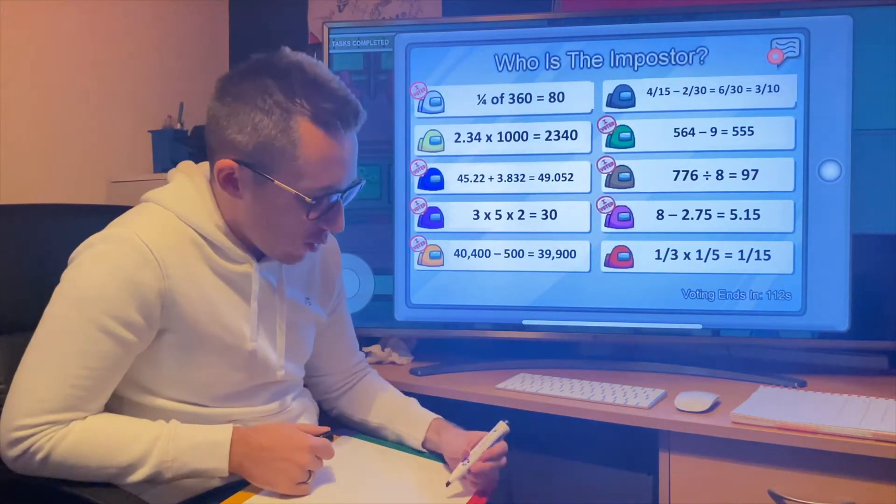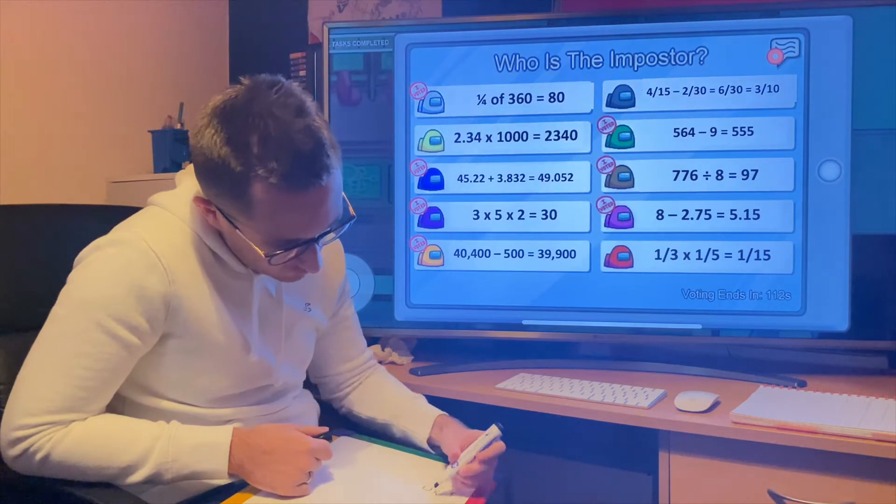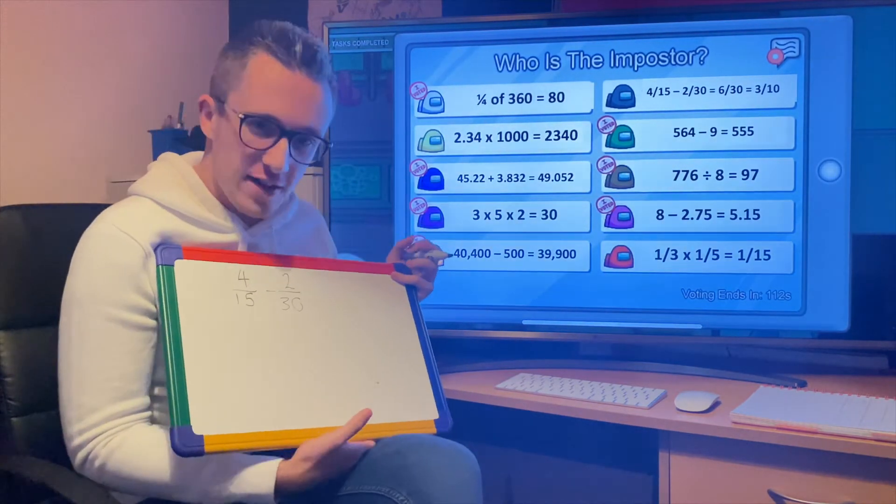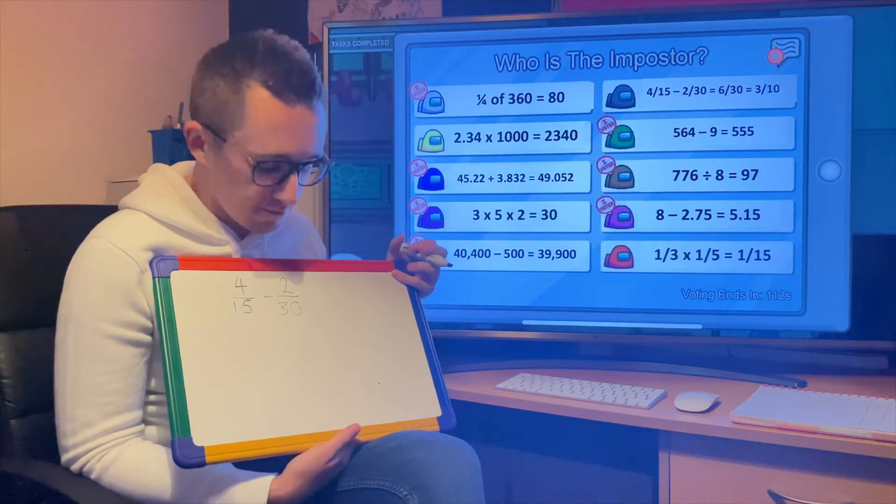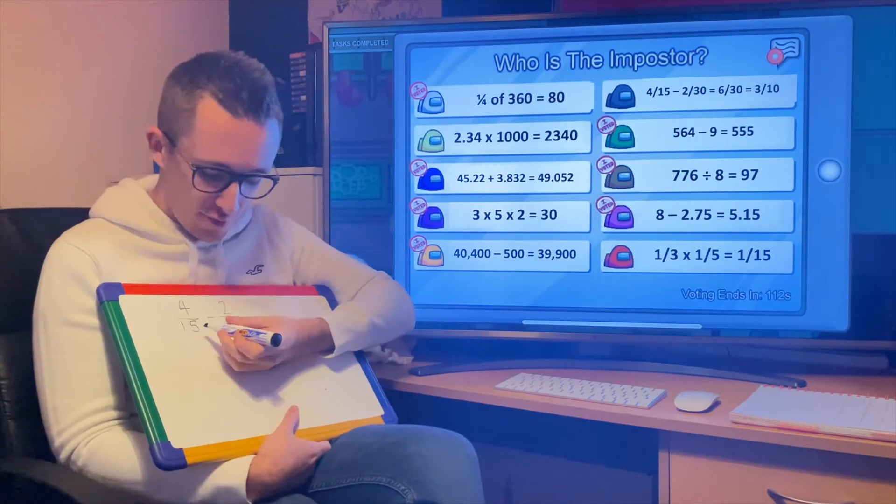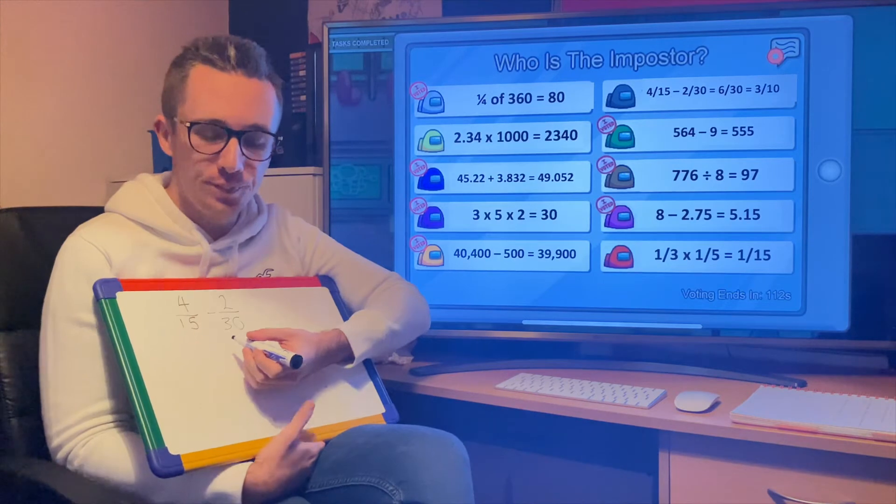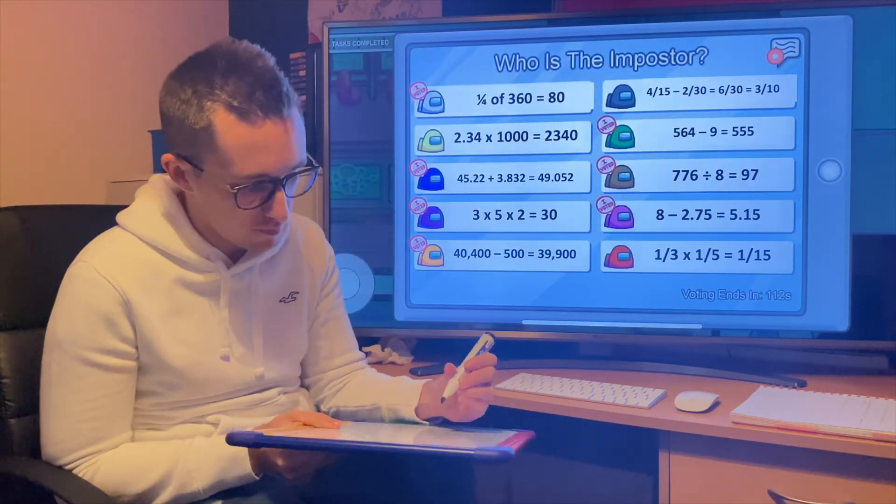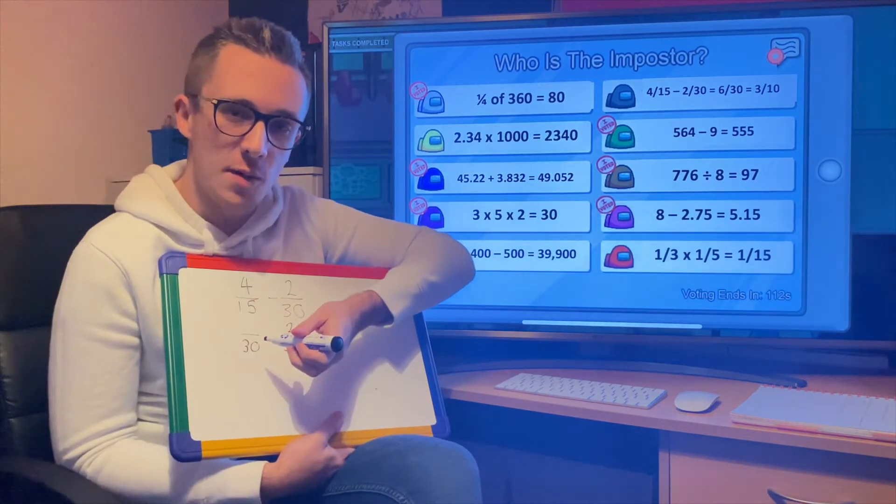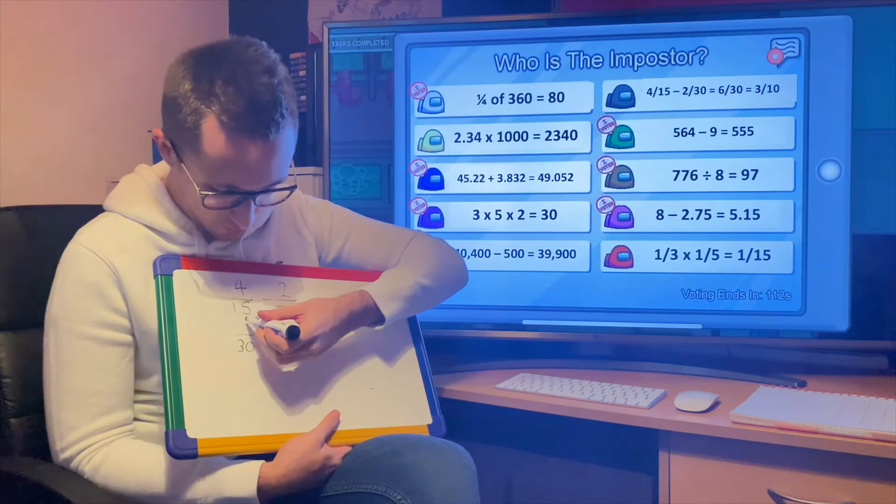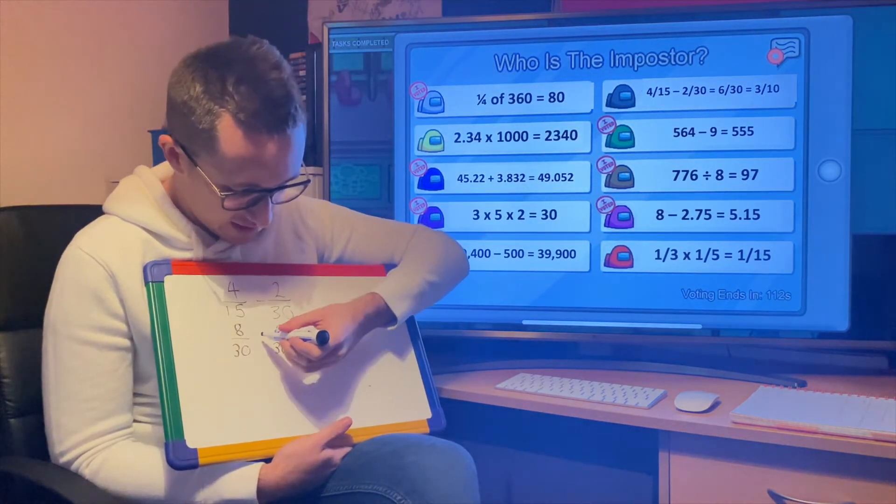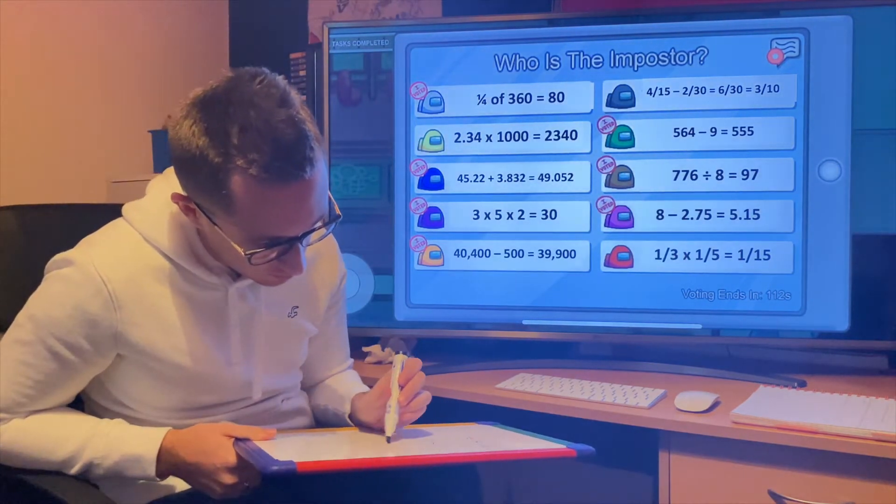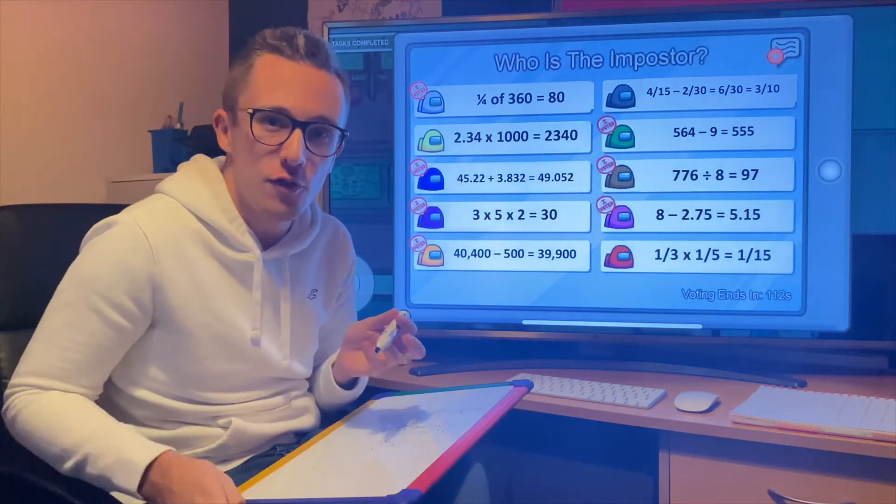This one up here: 4/15 take away 2/30. When we are adding or subtracting fractions, the denominators have to be the same. They're not at the moment, so we need to change one of them. Luckily, 15 goes into 30, so we only have to change one of them. How do we get from 15 to 30? We times it by 2. What we do to the bottom, we do to the top. So 4 would become 8. We can then do 8 take away 2, which is going to be 6/30, which is what they've got up there. 6/30 would cancel down to 3/10, so that's absolutely fine.